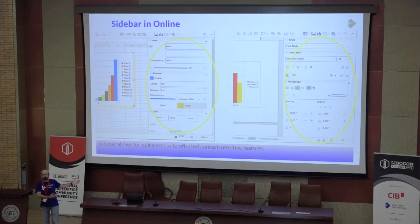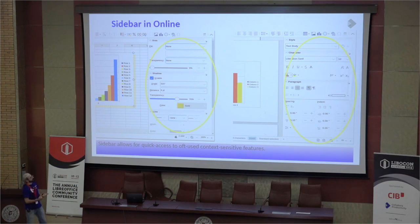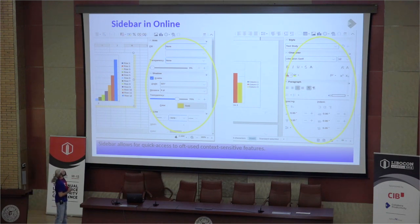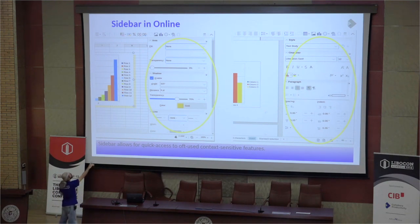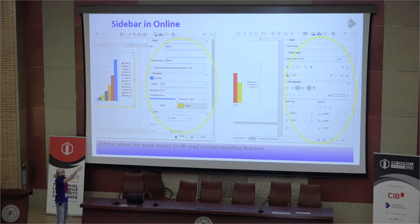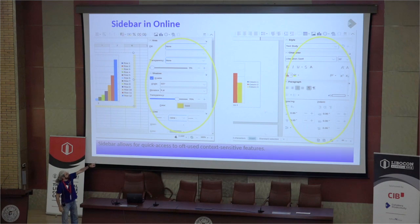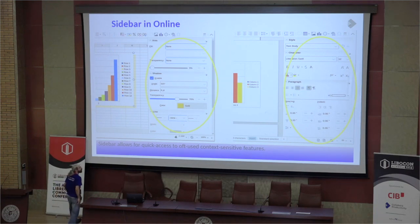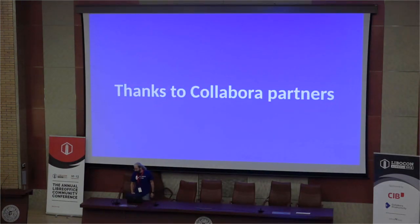This is what we're trying to do — bring the same functionality, hopefully in a slightly refined UI, to the web. You can see two different cases: this is Calc and this is Writer. They both work in the same way except you get different context — here we have the graph selected so you get area and shadow, whereas over there it's text so you get text style, character properties, and spacing.